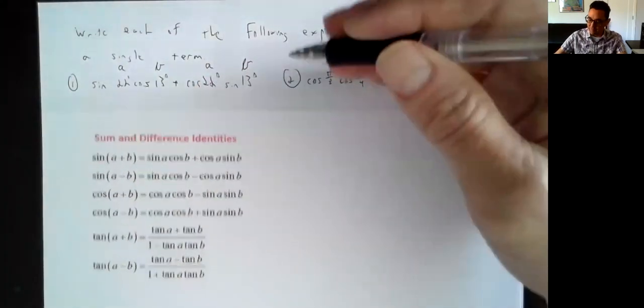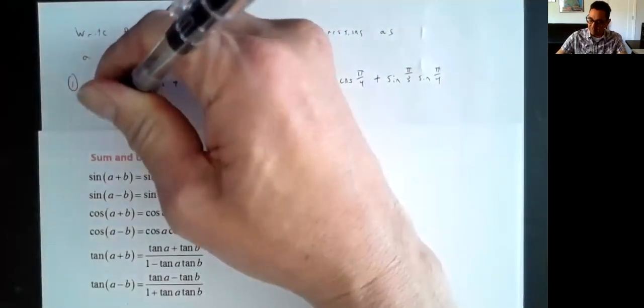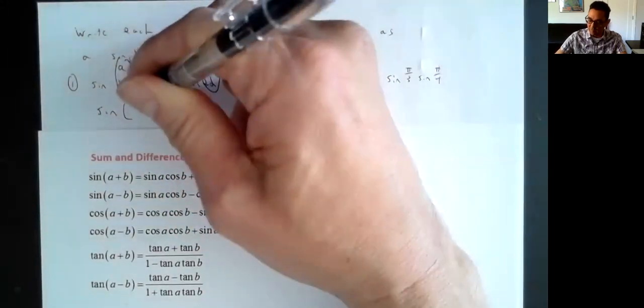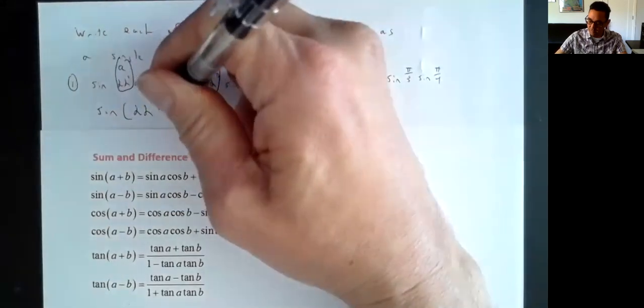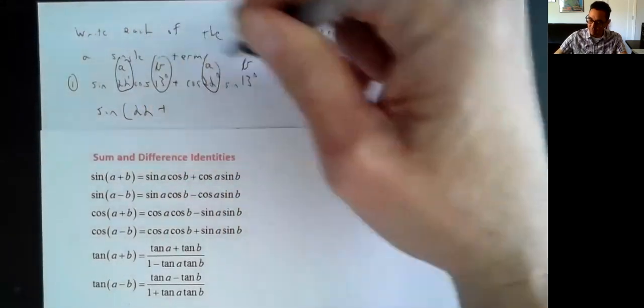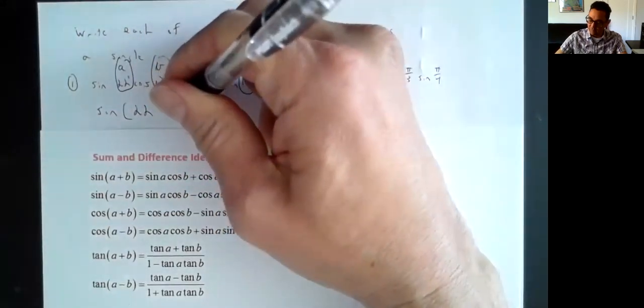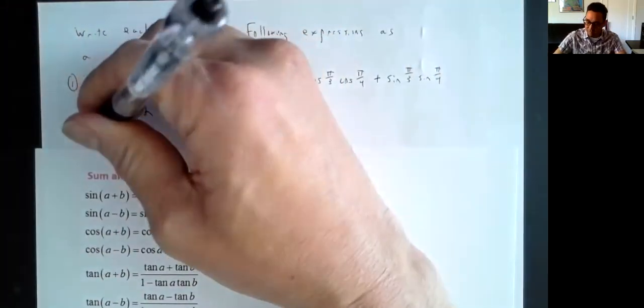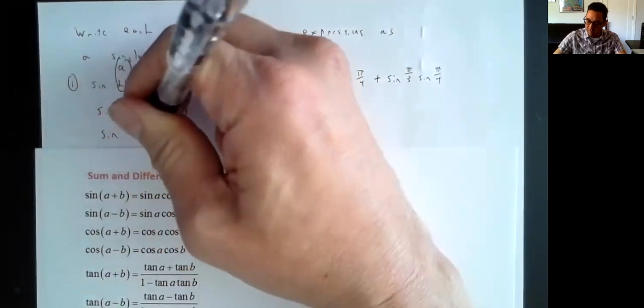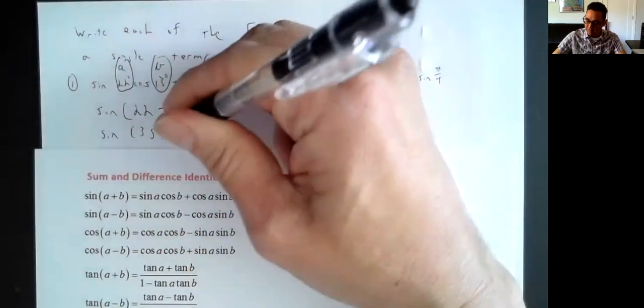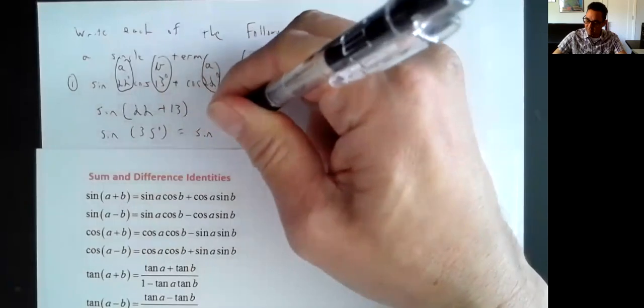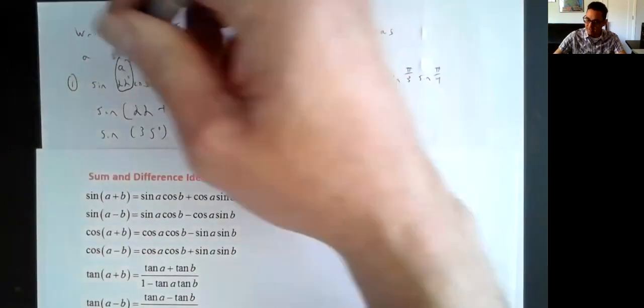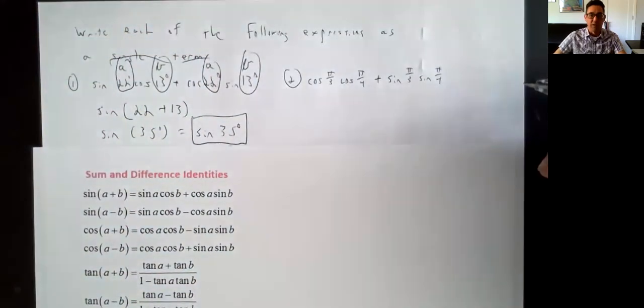So since it is an exact match, this is really just the same thing as sine of A, and my A angle was 22, plus my B angle, which was 13. Of course, 22 plus 13 is just 35. You don't even really need the parentheses; it's just the sine of 35 degrees, and that is a single term. So you're done.